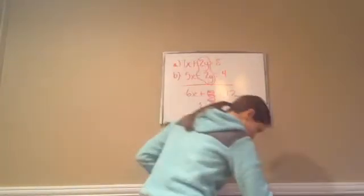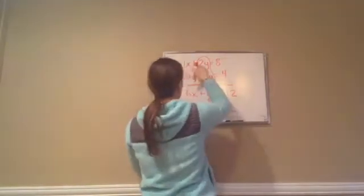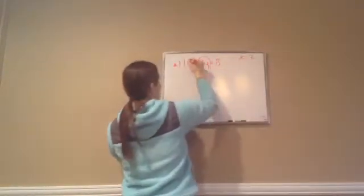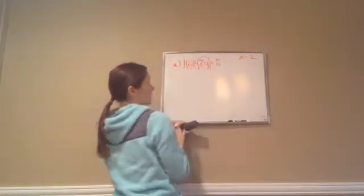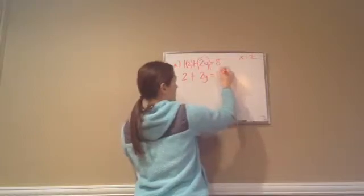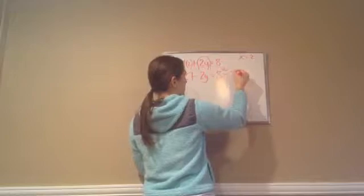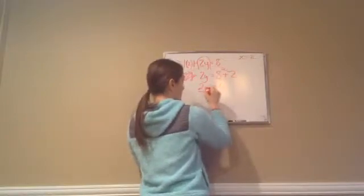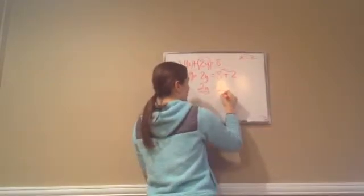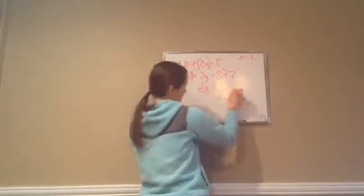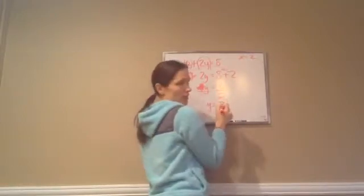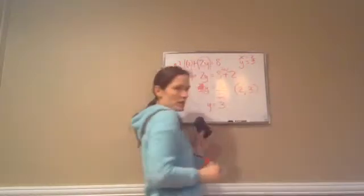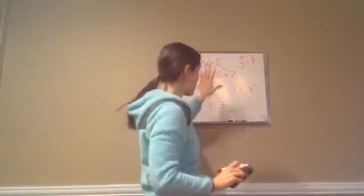Now I take this x equals 2 and move it back up to the top equation. Where x was, I put a 2. So now I get 2 plus 2y equals 8. I move the 2 across the equals sign and it becomes minus 2, so 2y equals 6. Since this says 2 times y, I divide by 2 — that gives y equals 3. So the answer is x equals 2 and y equals 3, written as coordinates: (2, 3).